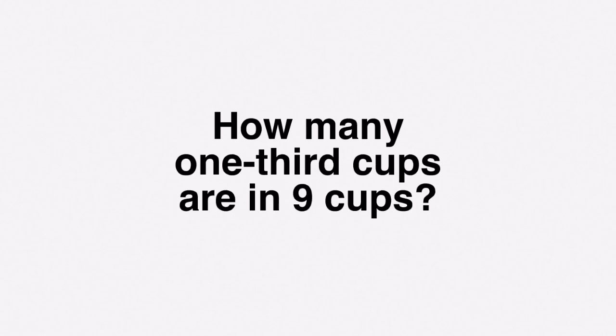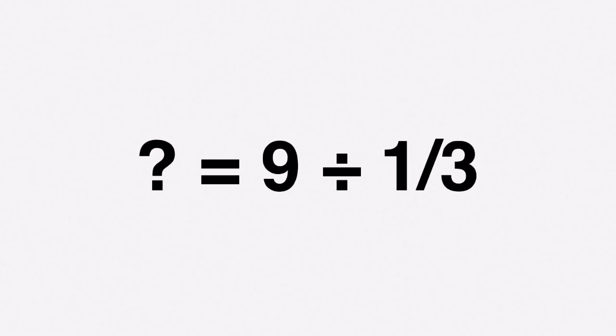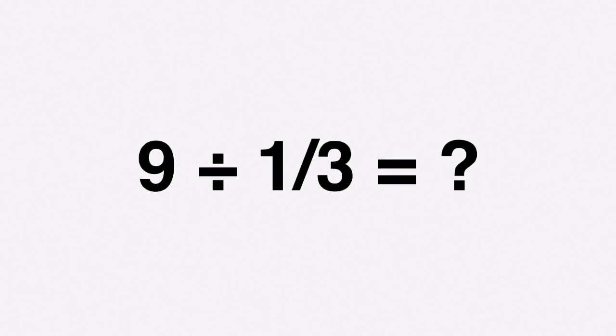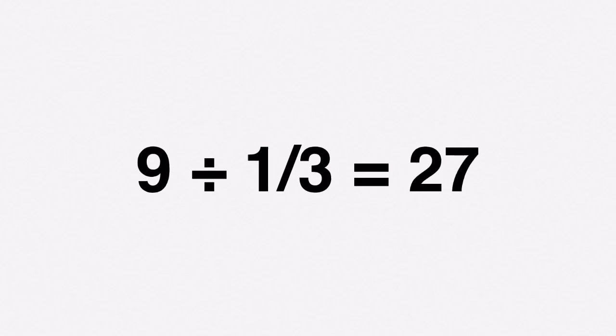Here's a new one: how many one-and-one-third cups are in 9 cups? This is measurement division — how many one and one thirds are in 9? We can write it as 9 divided by one and one third, which equals 9 times the reciprocal of one and one third, which is 3. So 9 times 3 is 27, meaning 9 divided by one and one third equals 27.